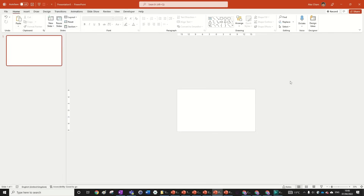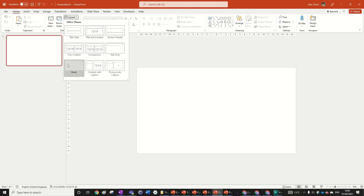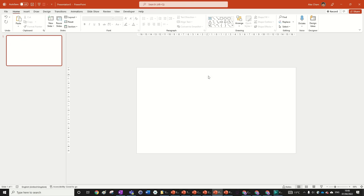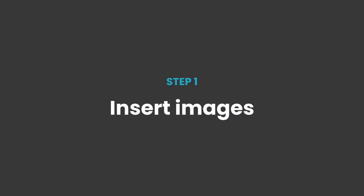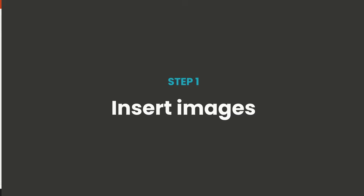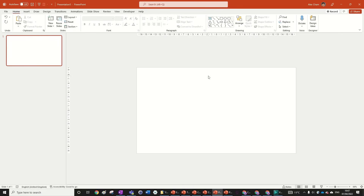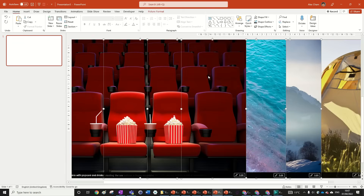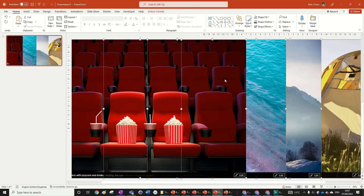Start with a blank presentation — you can get that by going to Layout and selecting Blank. The first step is to insert our images. I've got mine copied to my clipboard, so all I need to do is go Ctrl+V and here are our images.